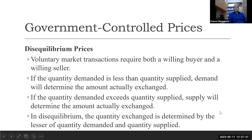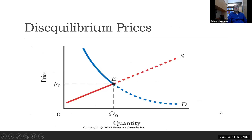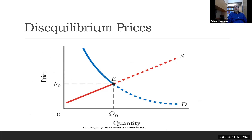Looking at the diagram, at point E there is equilibrium where quantity demanded and quantity supplied are equal, and the exchange taking place is at that equilibrium quantity.